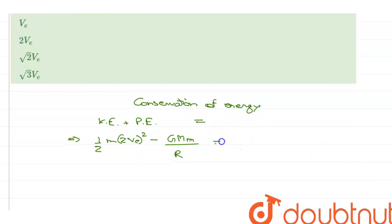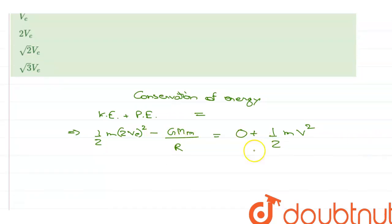This should be equal to, now at an infinite distance there will be no potential, so 0 plus 1 by 2 m V squared, that is the kinetic energy. There is a negative sign here because we are taking this potential energy with respect to the final point.